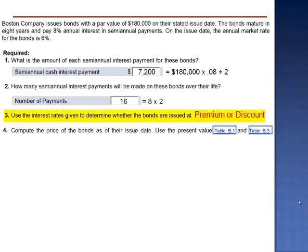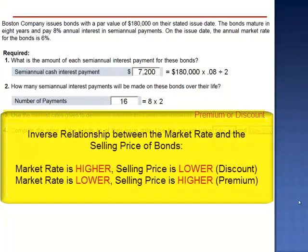Requirement 3. Use the interest rates given to determine whether the bonds are issued at a premium or a discount. Remember there's an inverse relationship between the market rate and the selling price.